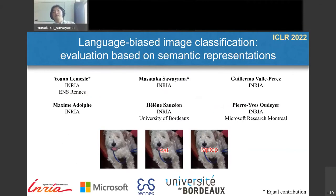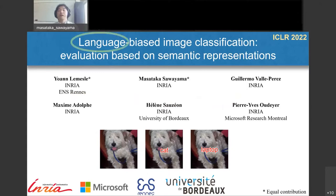Let me start to introduce our CLEAR paper. The title is "Language Biased Image Classification: Evaluation Based on Semantic Representations." An important keyword is language, which has largely contributed to recent advances in machine learning.